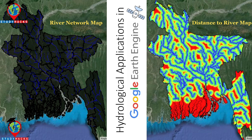Hello everyone, welcome to the Study Hacks Initiative of GIS and Remote Sensing. Today I will discuss a new series on hydrological replication in Google Earth Engine — basically different types of hydrological models and how we can implement them in Google Earth Engine. In this series I will explain all of those things one by one. Today's session covers how we can make the river network map and the distance-to-river map.